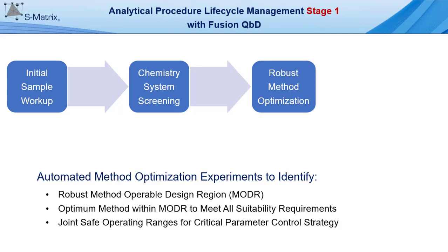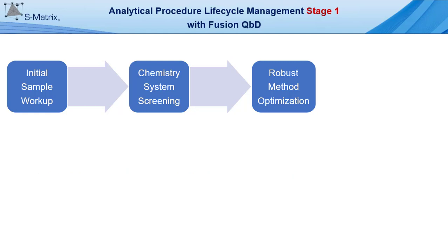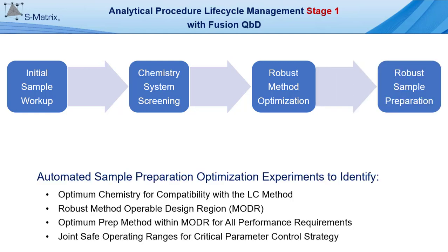This takes us through robust method optimization, where Fusion QBD enables you to identify the robust method operable design region (MODR), the optimum method within the MODR which meets all system suitability performance requirements, and the joint safe operating ranges for the critical parameters which can be transferred to a control strategy. In addition, Fusion QBD supports robust sample preparation method development, enabling identification of the optimum chemistry for LC method compatibility, the MODR of the sample preparation method, the optimum prep method within the MODR, and the joint safe operating ranges for critical parameters that can be transferred into a critical parameter control strategy.